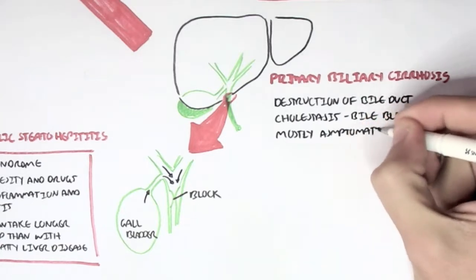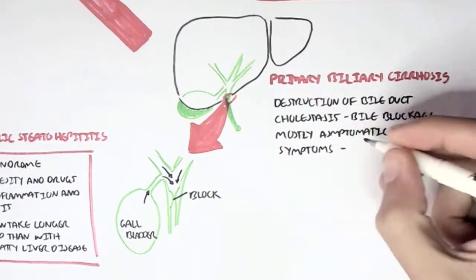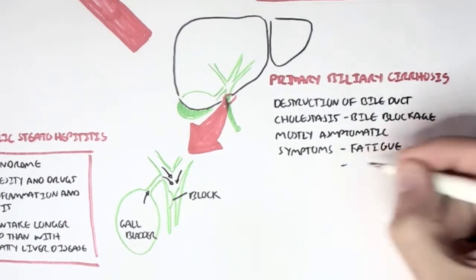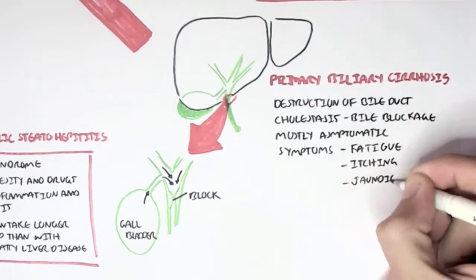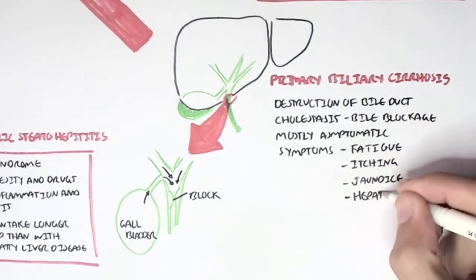It's mostly asymptomatic, but symptoms of primary biliary cirrhosis include fatigue, fever, jaundice and hepatomegaly, as well as itching.